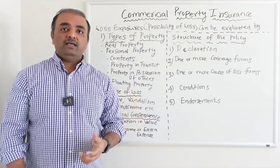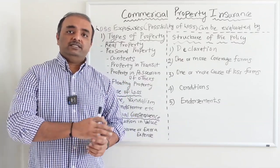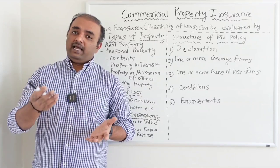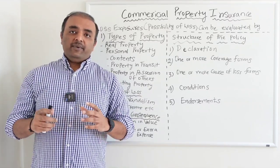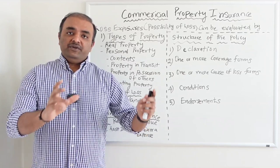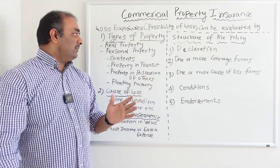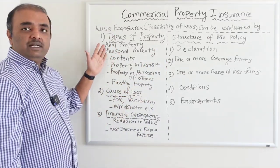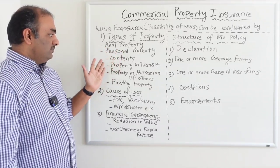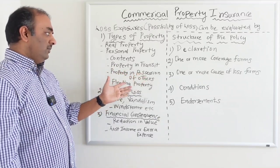There is also floating property. Most businesses have property that is always floating across multiple locations instead of one location. The camera is again a good example — cameramen frequently take their camera to videograph weddings or events. So, to summarize property types: we have real property, and under personal property we have contents, property in transit, property in possession of others, and floating property.